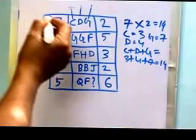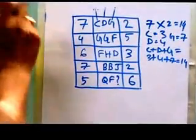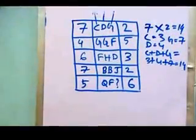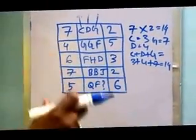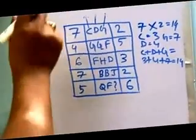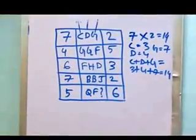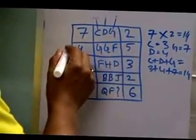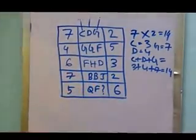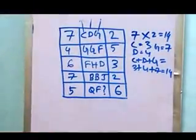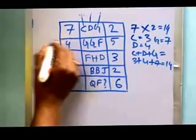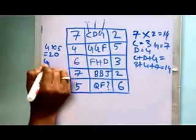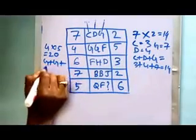Now just implement the similar logic in all the remaining rows. For the second row, 4 times 5 equals 20. Now G plus G plus F equals 7 plus 7 plus 6 equals 20.